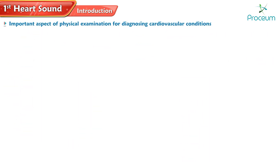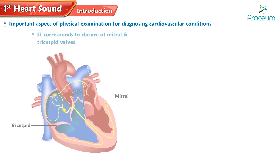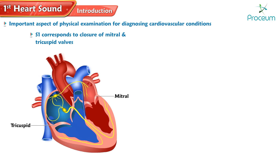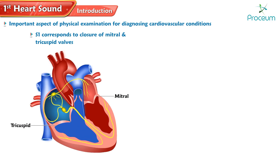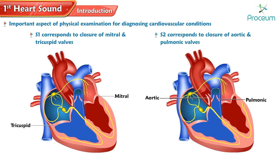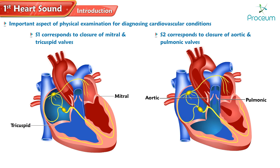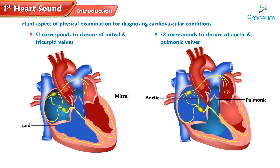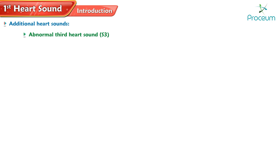Heart sounds are an important aspect of physical examination for diagnosing cardiovascular conditions. S1 marks the closure of the mitral and tricuspid valves, while S2 corresponds to the closing of the aortic and pulmonic valves. Beyond S1 and S2, certain medical conditions may give rise to additional heart sounds, such as an abnormal third heart sound S3.